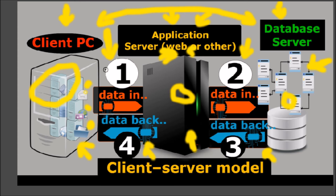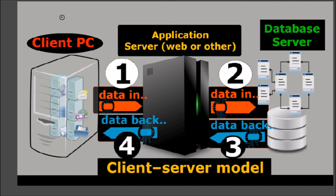Now we'll move on to the business example. Before we do, it's good to note that the client-server model is designed to handle multiple clients — potentially thousands of computers accessing the database server at once. This is why there are two parts: one that handles the front end, which is the application server, and the database part. You can have multiple database servers and multiple application servers, all designed to distribute the workload, also known as load balancing.